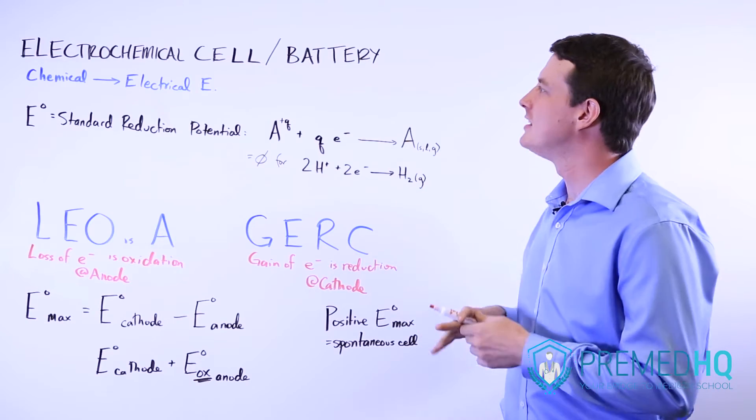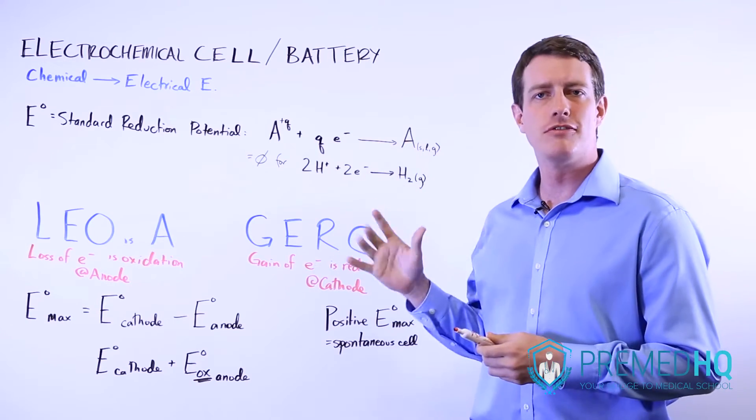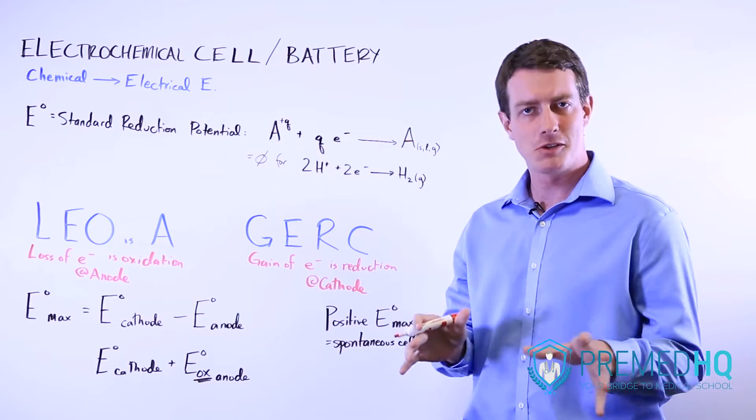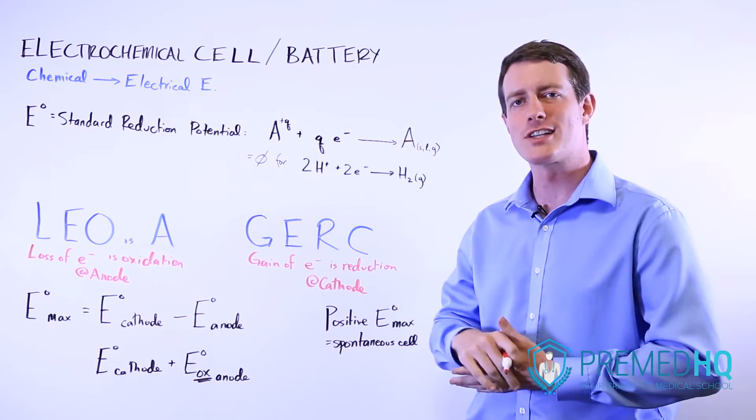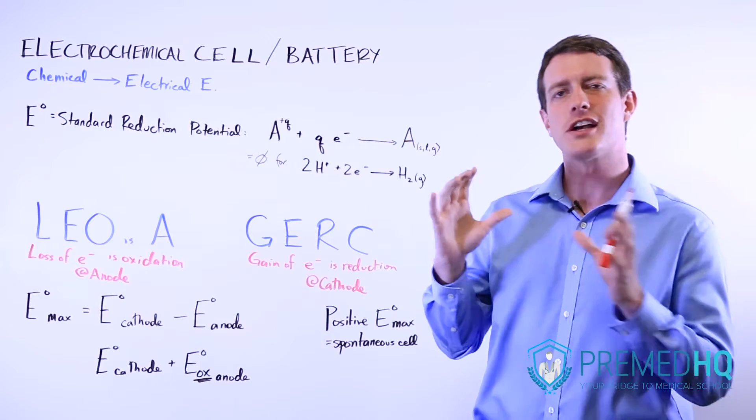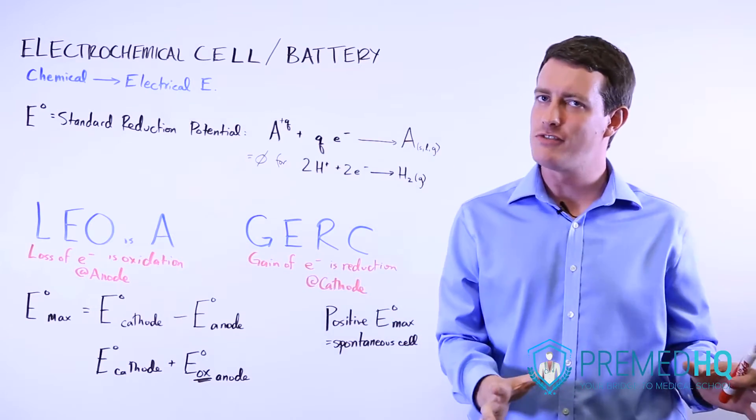Electrochemical cells and batteries exist in many different forms and are a popular question type on the MCAT Physical Sciences because they are at the intersection of chemistry and physics.